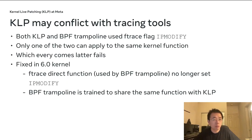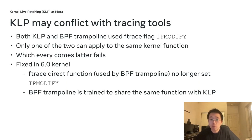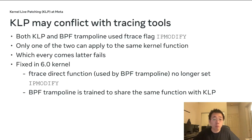Second, KLP may conflict with tracing tools. Specifically, both KLP and BPF trampoline use the ftrace flag IP_MODIFY, meaning they can modify the IP of a function. As a result, only one of the two can apply to the same kernel function at a time, and whichever comes later fails. This is fixed in 6.0 kernels — the ftrace direct function used by BPF trampoline no longer sets IP_MODIFY, and the BPF trampoline is trained to share the same function with KLP.